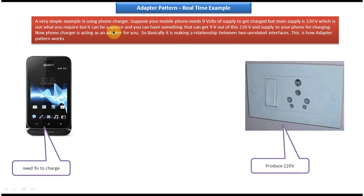This mobile phone and electric socket have incompatible interfaces because we cannot directly connect a mobile phone to the electric socket. So how do we make these two incompatible interfaces work together? We have to introduce an adapter.